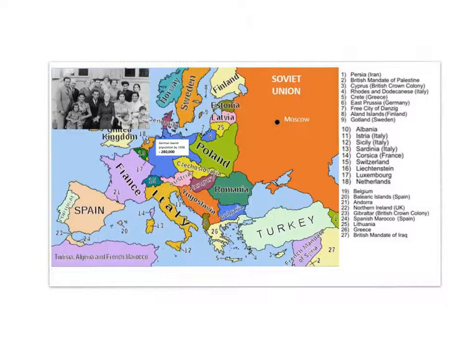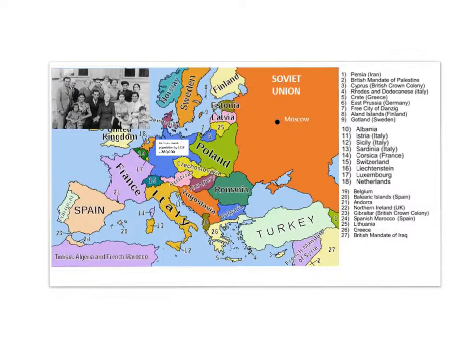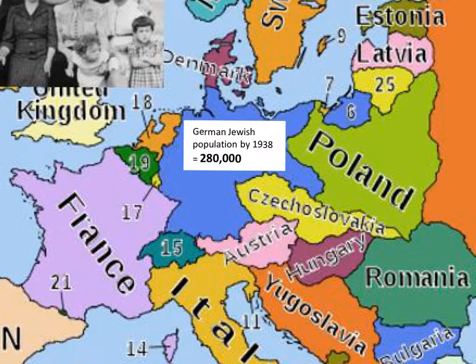By 1938, going back to the map and zooming in on Germany, you can see that Germany's Jewish population had actually halved. Remember it was 565,000 — it's now halved. So effectively by 1938 it had reduced from 1% to half a percent. Still a lot left — 280,000 — but in that sense Hitler's policy, his solution, was working as it was in 1938.